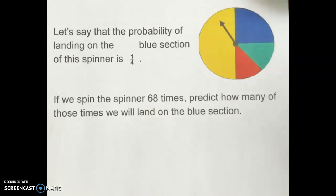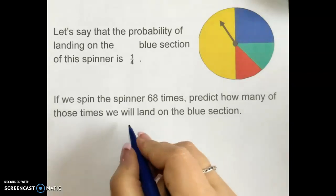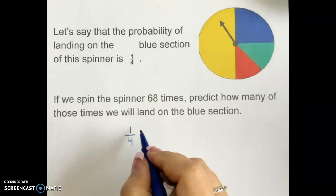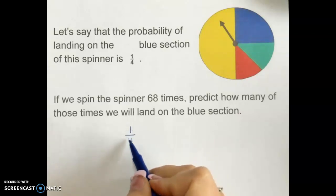We're going to take a look at a different example. Let's say that the probability of landing on the blue section of this spinner is one fourth. If we spin the spinner 68 times, predict how many of those times we will land on the blue section. So since we know that the probability of landing on the blue section is equal to one fourth, that means out of every four spins, we'll land on blue once.